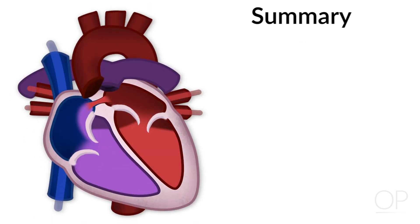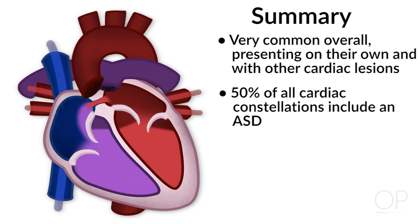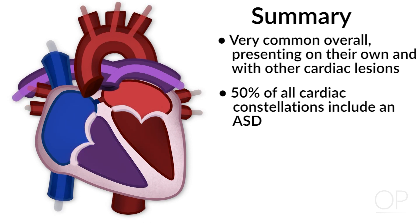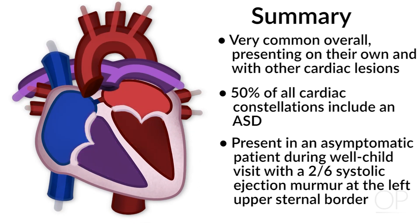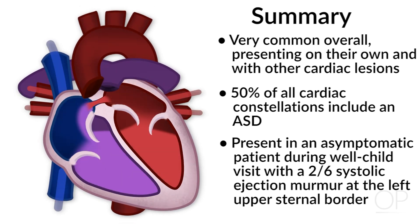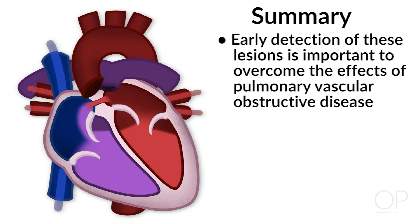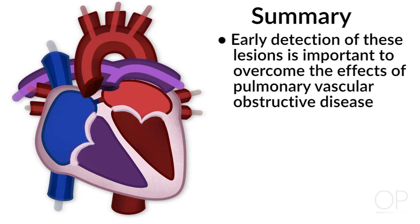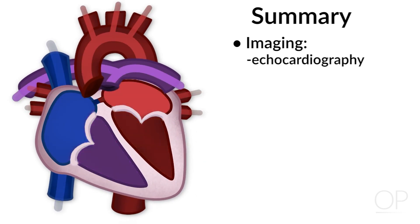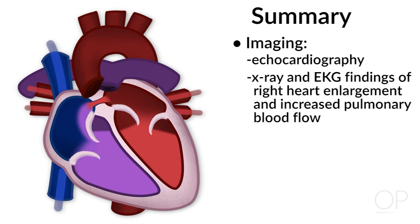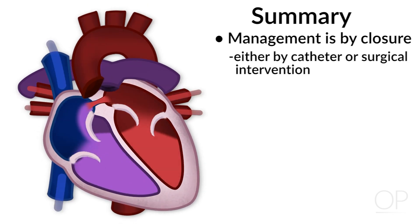In summary, atrial septal defects are very common overall and commonly seen in other cardiac lesions — up to 50% of all cardiac constellations include an atrial septal defect. They usually present as an asymptomatic patient during a well child check with a 2 over 6 systolic ejection murmur at the left upper sternal border. Early detection is very important to prevent the effects of pulmonary vascular obstructive disease. Imaging is usually straightforward with echocardiography, with x-ray and EKG showing right heart enlargement and increased pulmonary blood flow. Management is by closure, either in the cath lab or surgically.